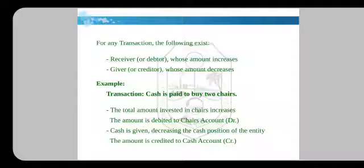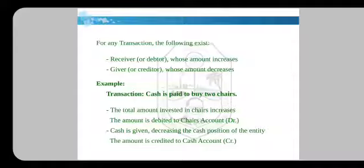There is a chairs account in which money will get added. The total amount invested in chairs increases as we are going to buy chairs. The amount is debited to the chairs account. So the chairs account is a receiver or debitor whose amount increases. Cash is given by the buyer, so the cash position of that buyer decreases, and the amount is credited to the cash account — the creditor whose amount decreases. In accounting, debitor is written as DR. and creditor is written as CR.